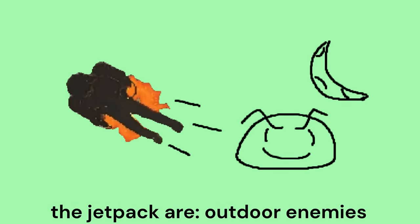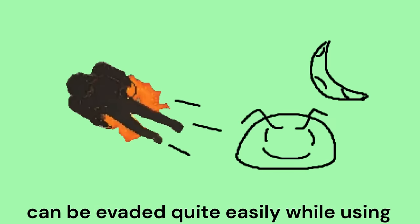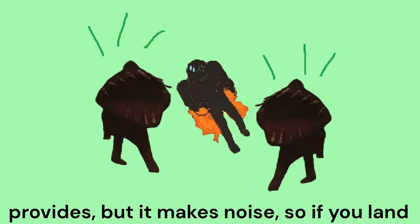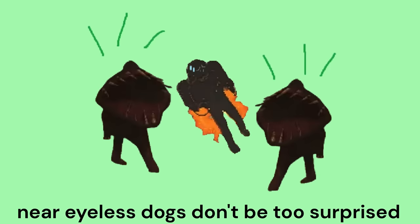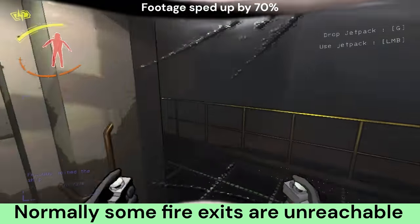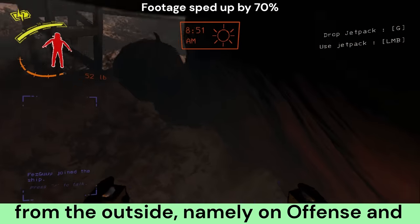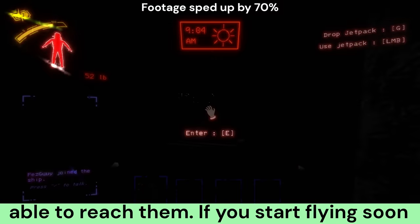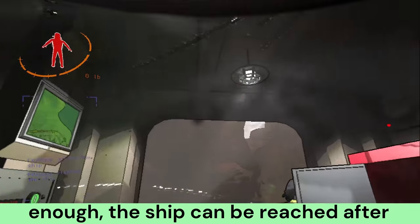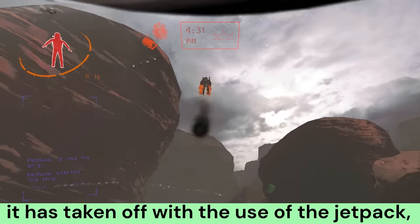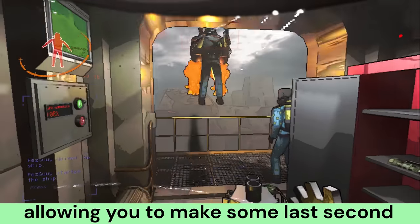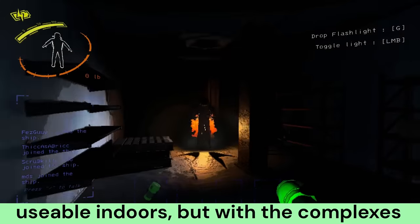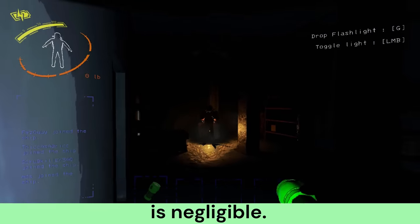Some unconventional uses for the jetpack are: Outdoor enemies can be evaded quite easily while using the jetpack, due to the high mobility it provides. Normally some fire exits are unreachable from the outside, namely on offense and dine, but with the jetpack you are able to reach them. If you start flying soon enough, the ship can be reached after it is taken off with the use of the jetpack, allowing you to make some last second clutch escapes with it.